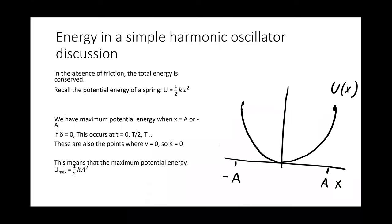For energy, we plot it as a function of position rather than time. The potential energy of the spring is one-half kx-squared — that's a parabola. Maximum potential energy occurs at maximum x, which happens at time zero, half the period, the full period, and so on. The amplitude tells us how far up the curve we get, so plugging in x equals the amplitude gives the maximum potential energy.